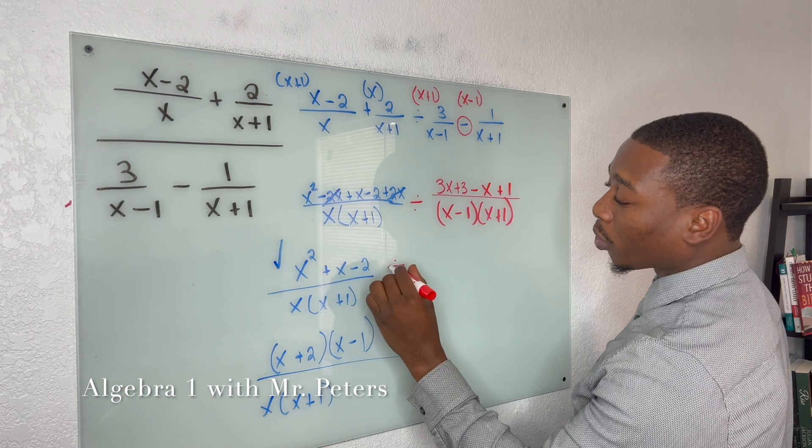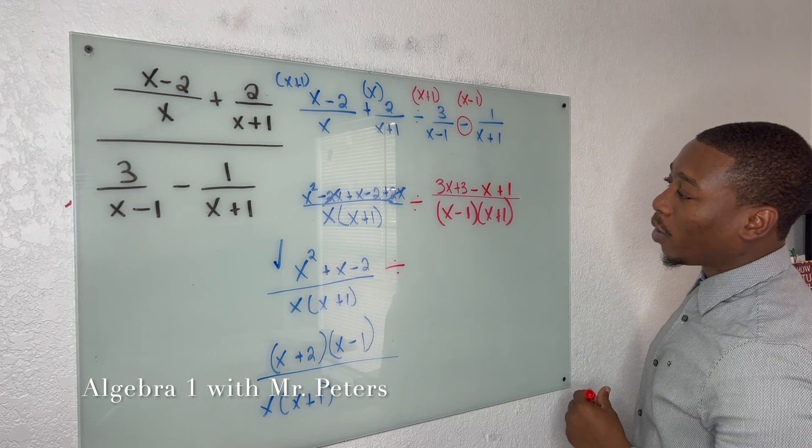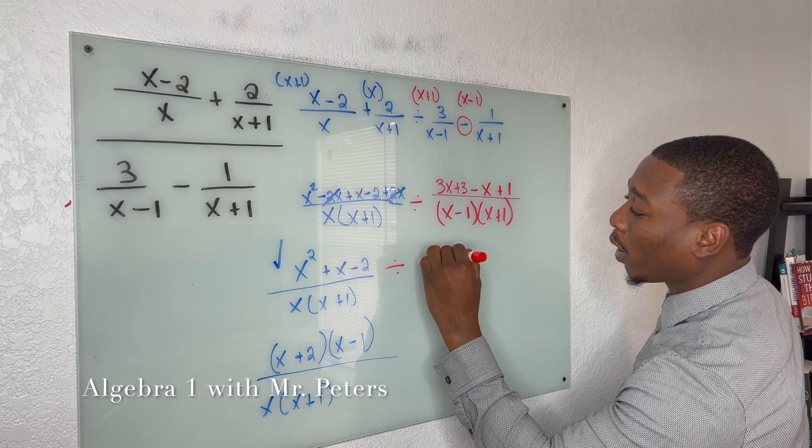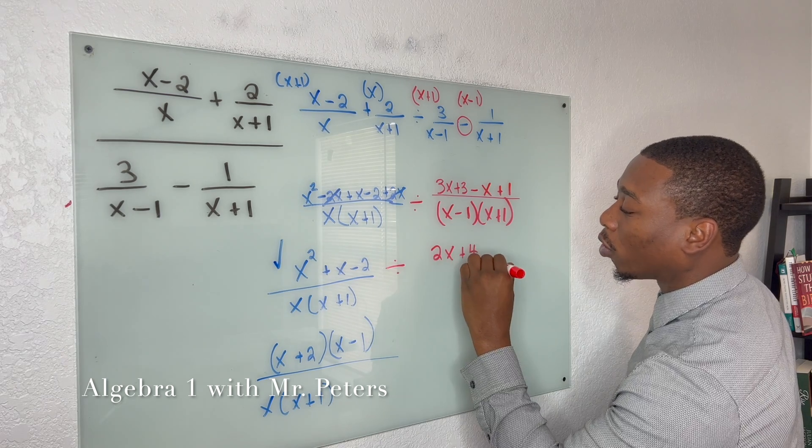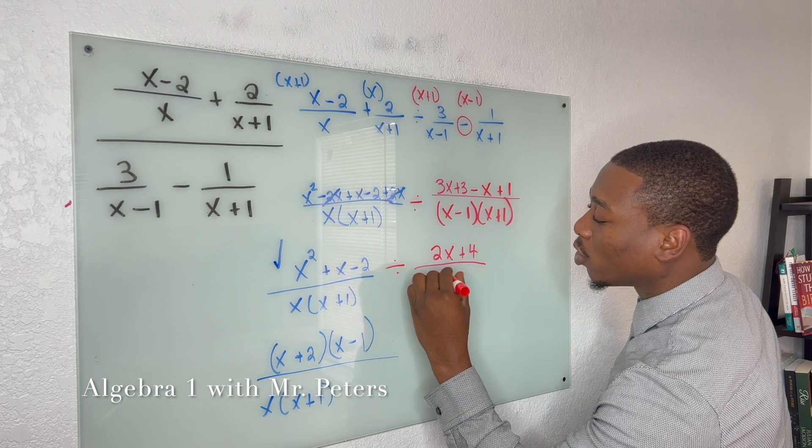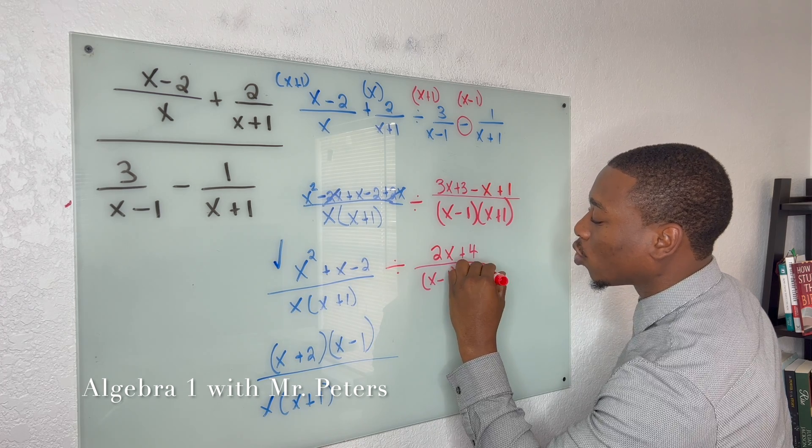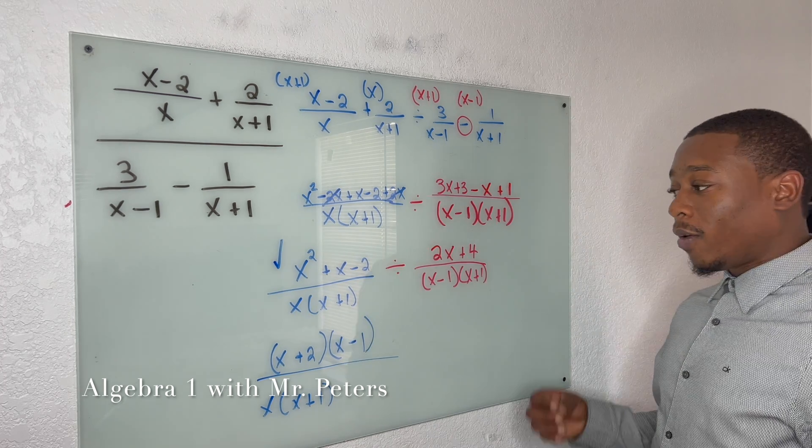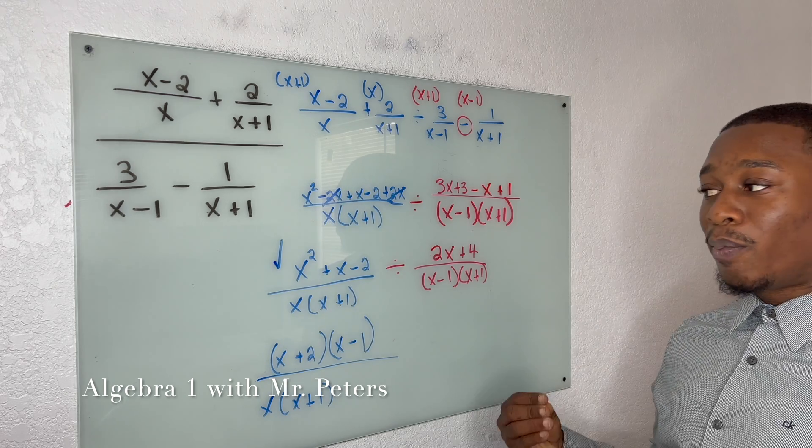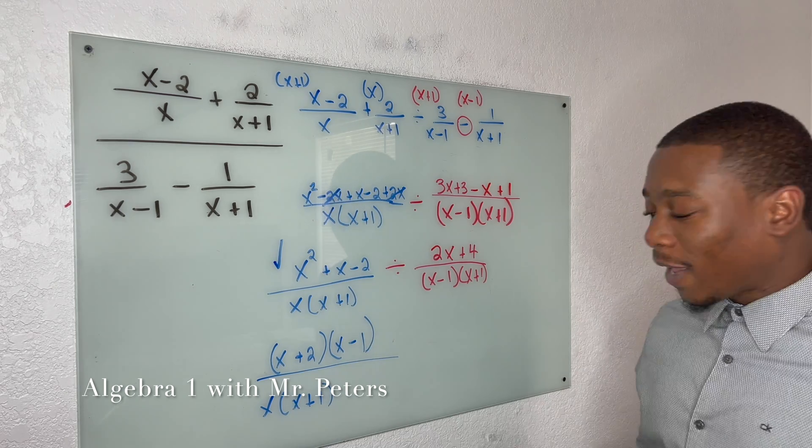So now we're going to clean this up. And once we do, we'll have 2x plus 4 all over x minus 1 times x plus 1. So now we're at the most important part of the problem, the last step.